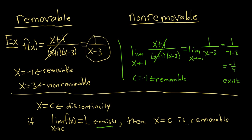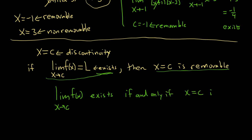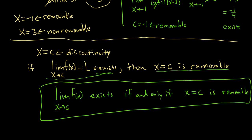This is a nice criteria, and it works both ways. If the discontinuity is removable, the limit exists. Likewise, if the limit does not exist, it's non-removable. More formally: the limit as x approaches c of f(x) exists if and only if x equals c is removable. This is something we'll use for harder problems involving removable and non-removable discontinuities.